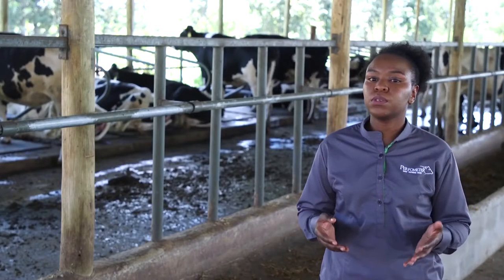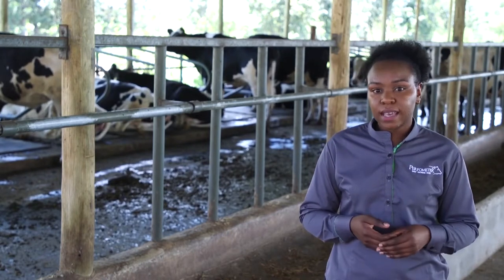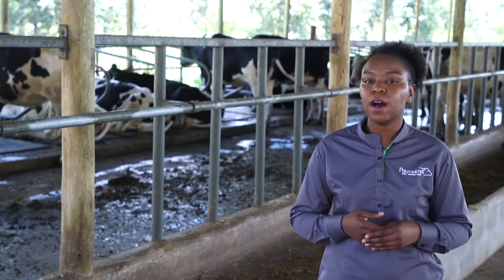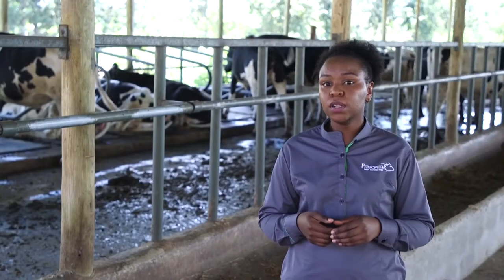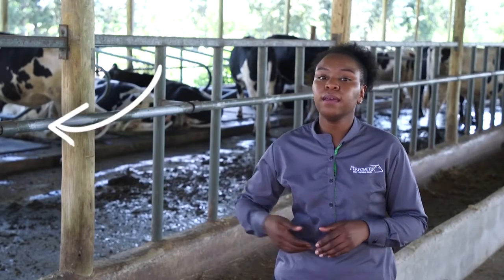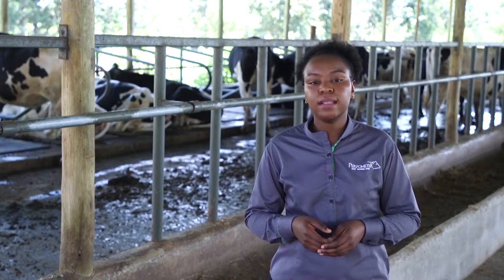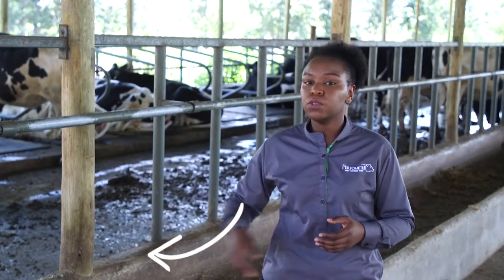The cubicles are among the most important parts of the barn, so we have to get it right. Since we are designing for a cow, we need to know her general dimensions. The overall length of the cow is about 2.5 meters, which becomes the length of the cubicle. Her shoulder height is about 1.2 meters, which determines the neck rail position at both the cubicle and the feed alley to my right. The distance between the brisket and the floor is about 45 centimeters, and this dimension helps us know how high the curb at the feed trough should be, which is also to my right.